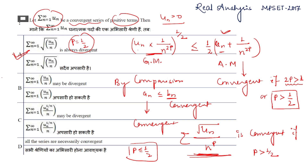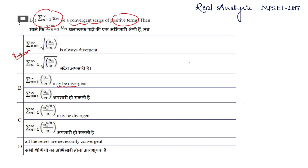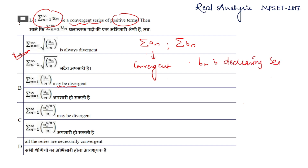Now checking option B: uₙ/n may be divergent. We need to check whether this series diverges or converges. We have a result: if Σaₙ is convergent and bₙ is a decreasing sequence with limit n→∞ of bₙ going to 0, then Σaₙbₙ is convergent.